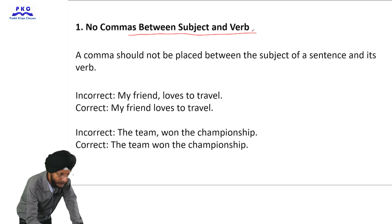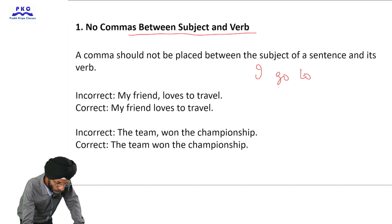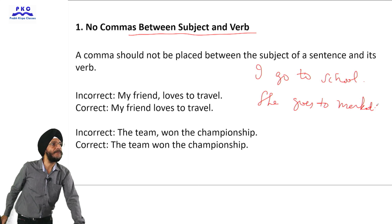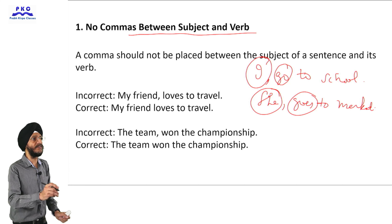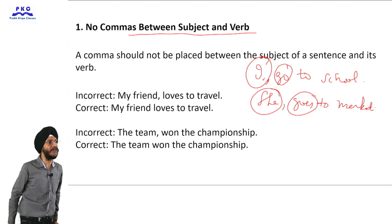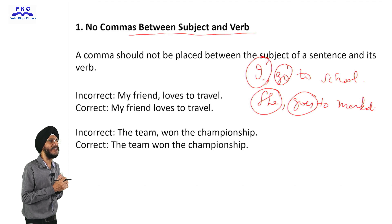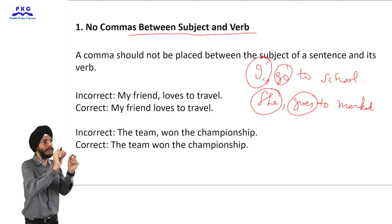No commas between subject and verb. For example: 'She goes to market.' Here, 'She' is the subject and 'goes' is the verb. If we insert a comma between the subject and the verb, it is unnecessary and the sentence will look awkward. It is grammatically incorrect to insert a comma between the subject and verb of a sentence.